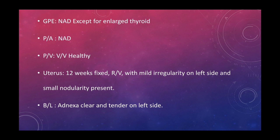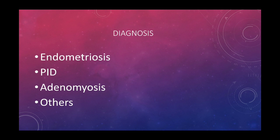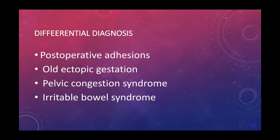On general physical examination, no abnormality was detected except for enlarged thyroid. Per abdomen showed no abnormality. PV examination showed vulva and vagina healthy, uterus 12 weeks in size, fixed, with mild irregularity on the left side and small nodularity present. Bilateral adnexa were clear and tender on the left side. Differential diagnosis made included endometriosis, PID, adenomyosis, post-operative adhesions, old ectopic gestation, pelvic congestion syndrome, and irritable bowel syndrome.